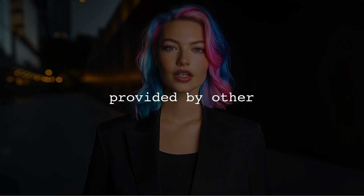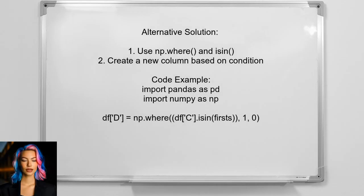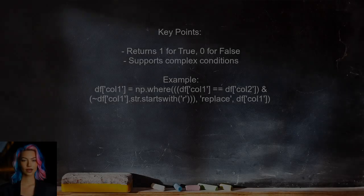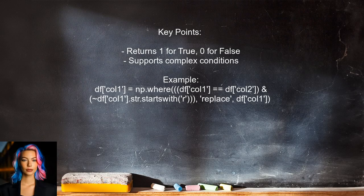Now let's look at the answers provided by other users. An alternative solution suggests using the numpy where function along with pandas' isin method. This approach allows you to create a new column in your data frame that indicates whether the values in column C are present in the first list. This method is efficient and concise, returning one if the condition is true and zero if false. It also allows for more complex conditions using bitwise operators.